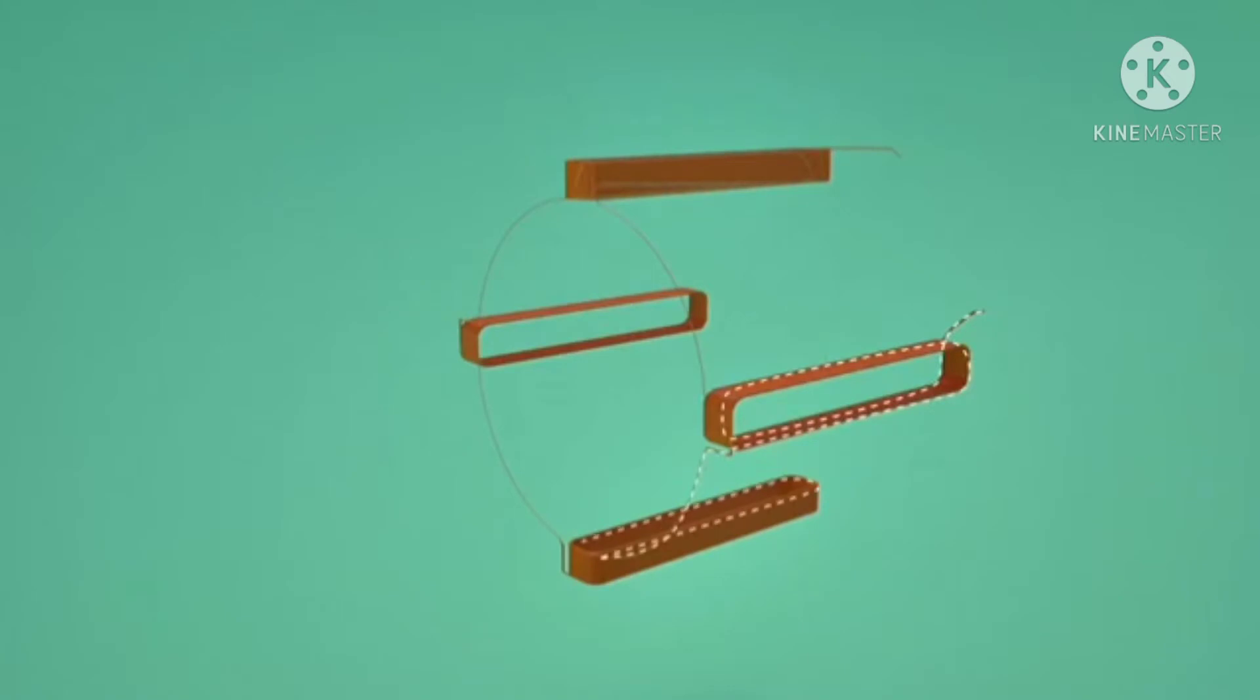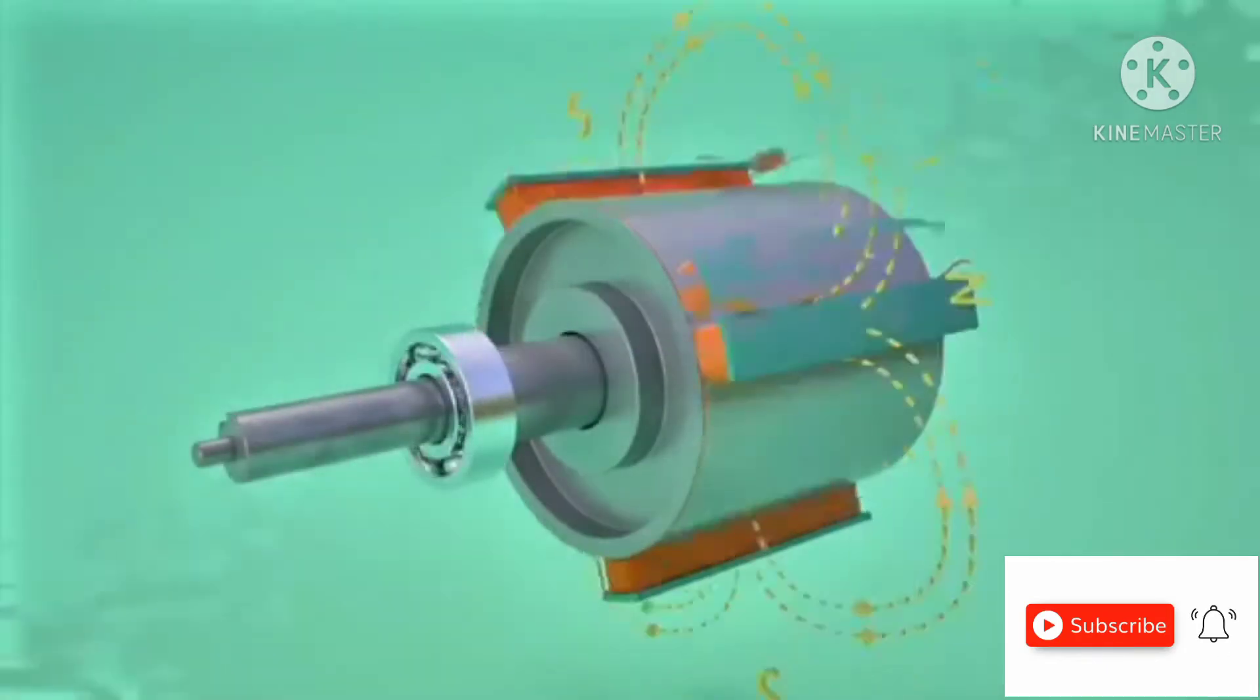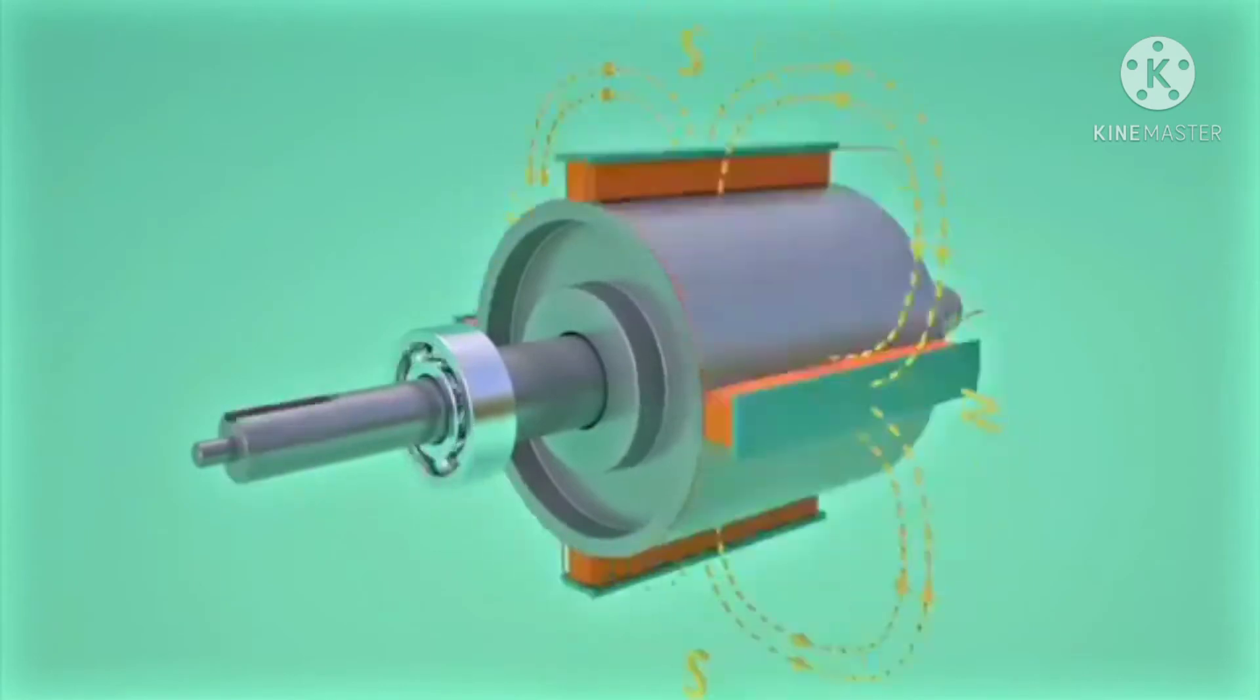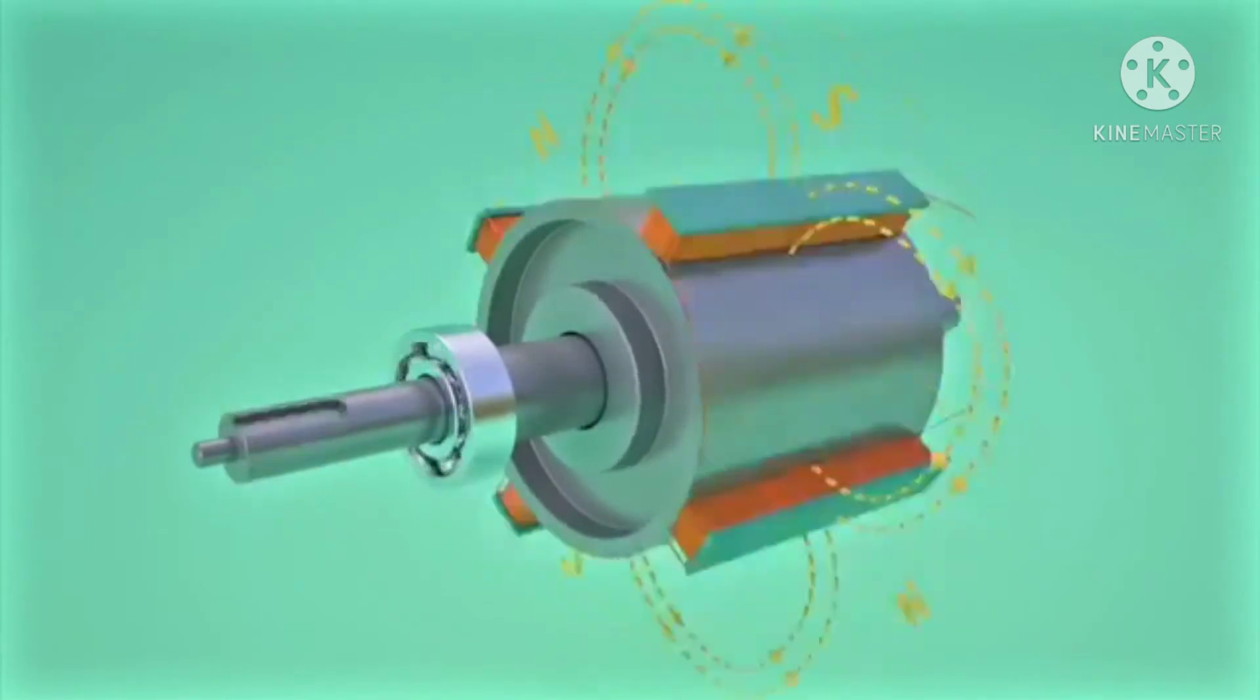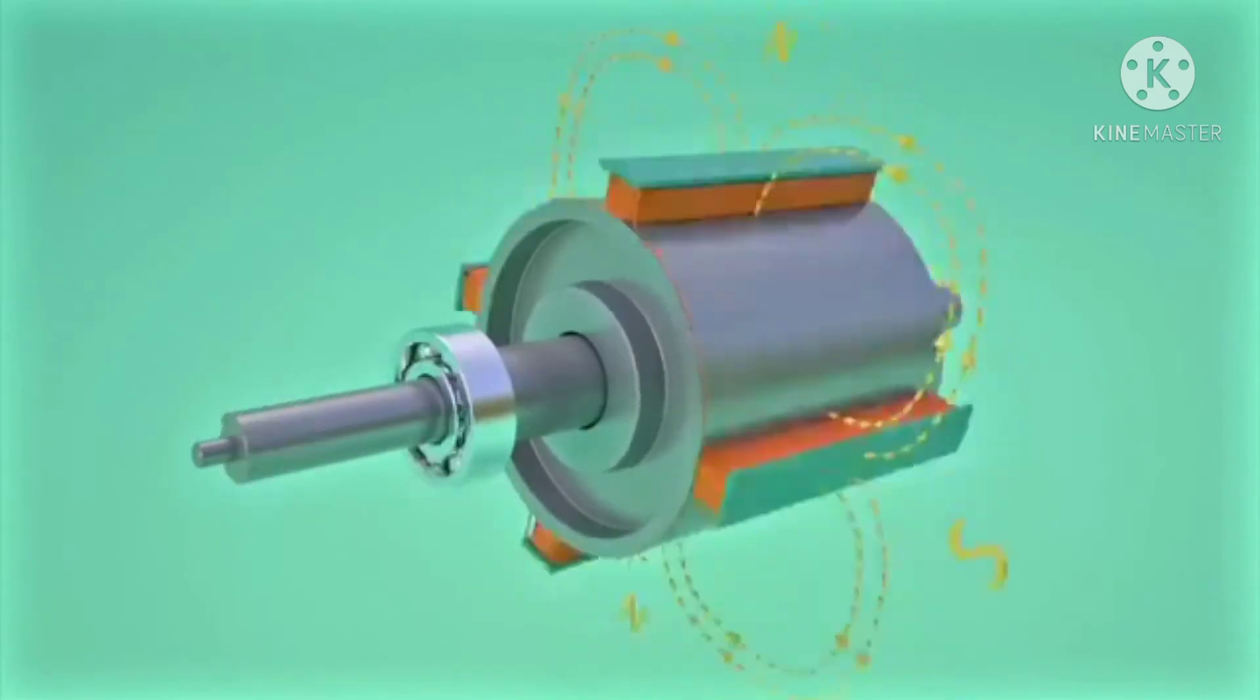Rotor coils are excited with a DC power source. The magnetic field produced around it would be as shown. The rotor is made to rotate using the shaft. This makes the rotor flux also rotate along with it at the same speed.